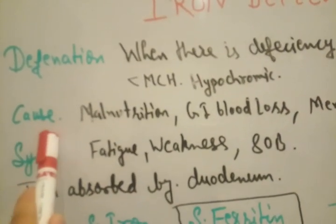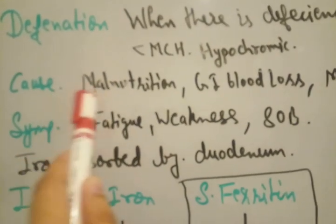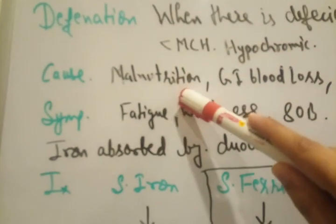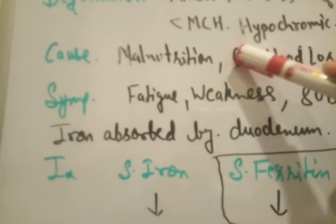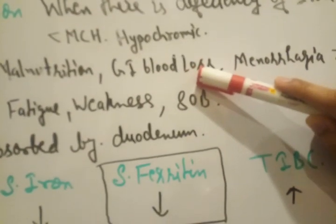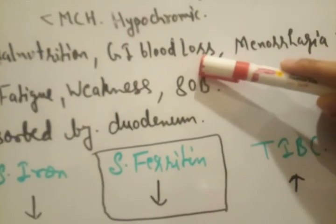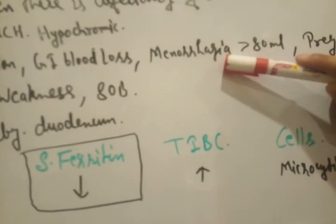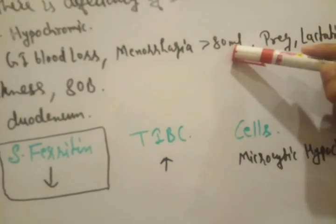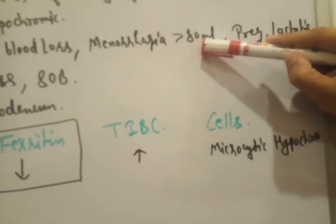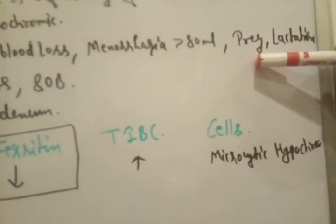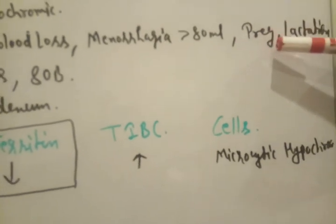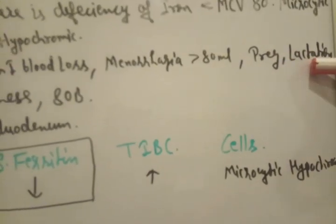What are the causes of iron deficiency? Causes include malnutrition, if the patient does not have sufficient amount to eat, if he is poor. GI blood loss in case of hematemesis, vomit with blood, hematochezia, fresh blood in stool, menorrhagia, more than 80 ml blood loss per day during menstruation. In case of pregnancy, consumption and demand of iron increases. In case of lactation, also same thing.